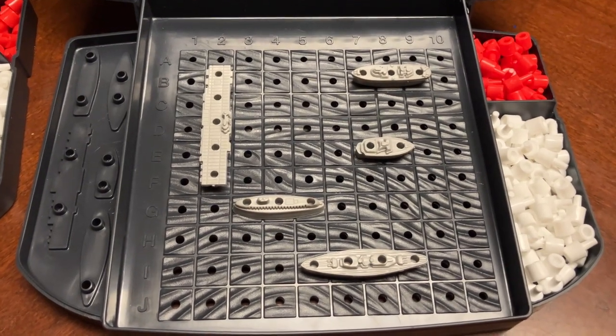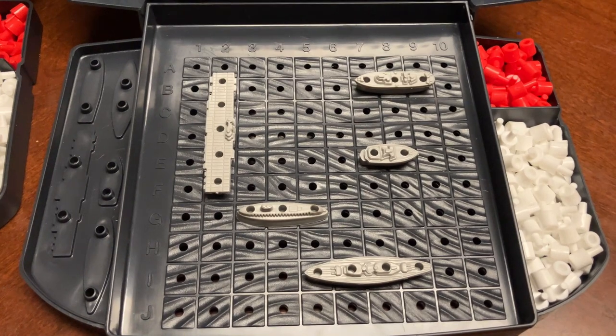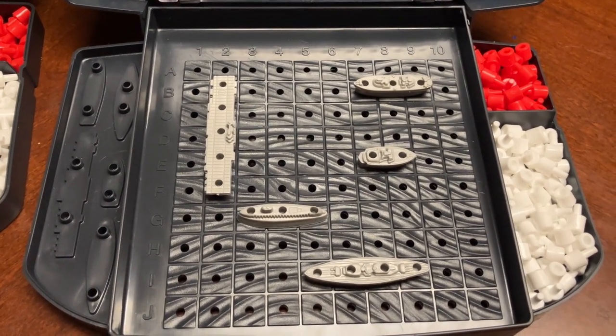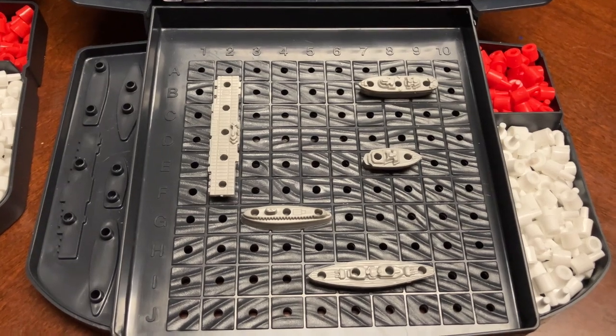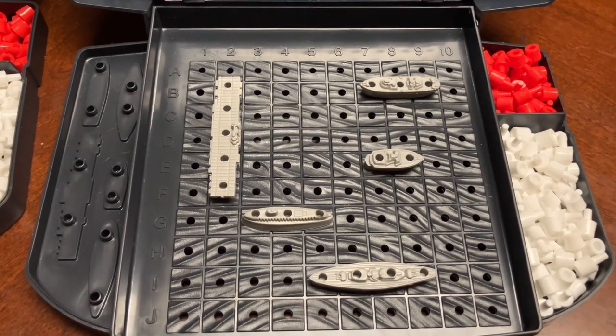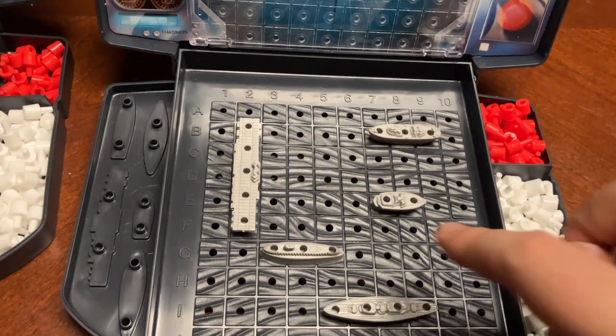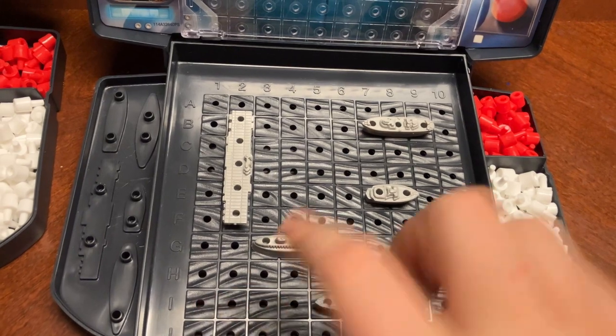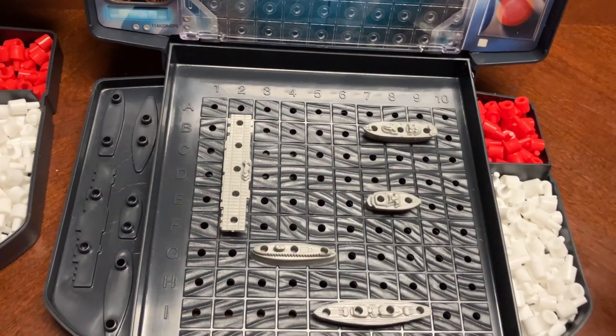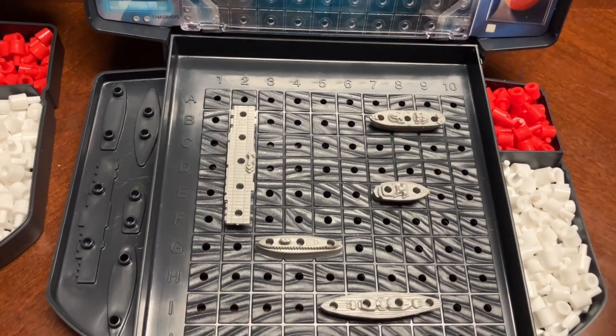One thing I would consider is if you play this a lot and you notice your opponent has a tendency to focus on a particular area don't clump all your ships in that area. So if your opponent tends to start in the bottom right corner or the bottom left corner or the center don't put all your ships there. You might want to put one ship in that area but don't put all your ships there.